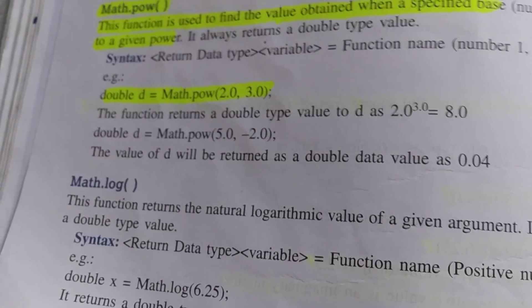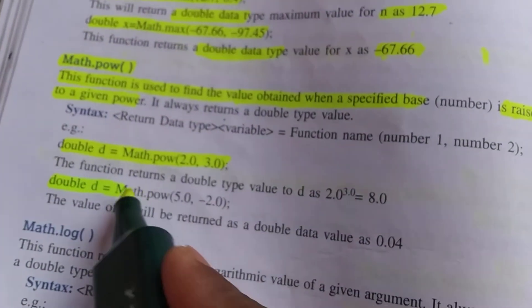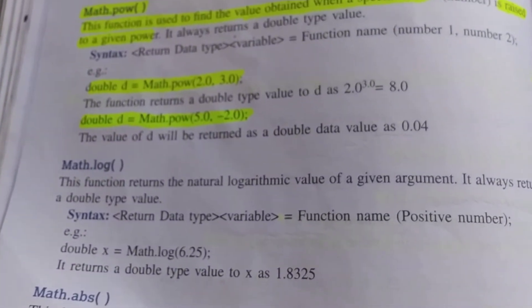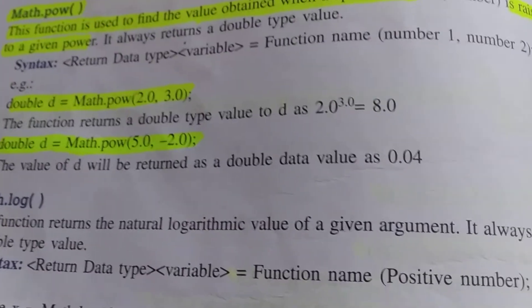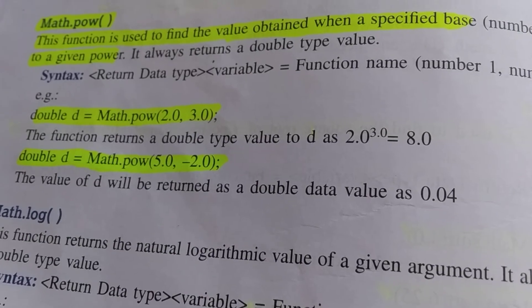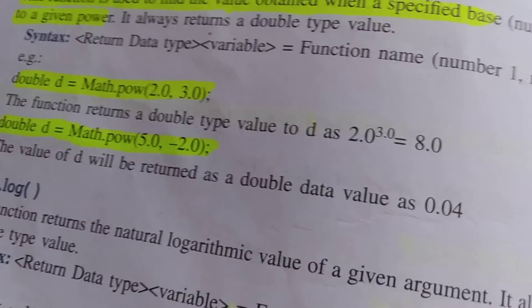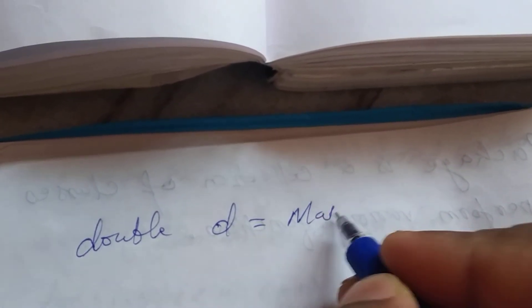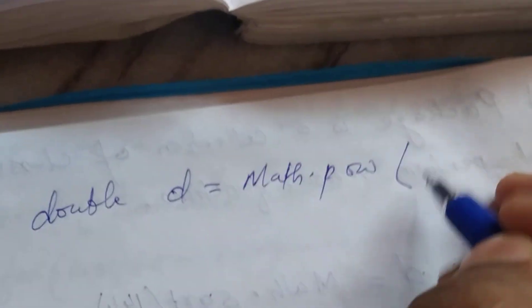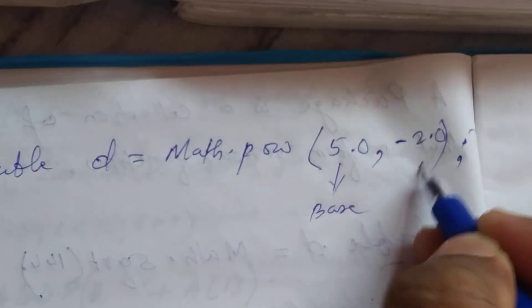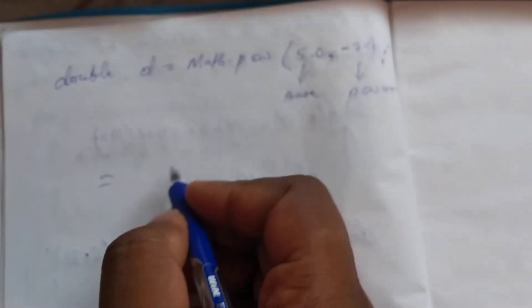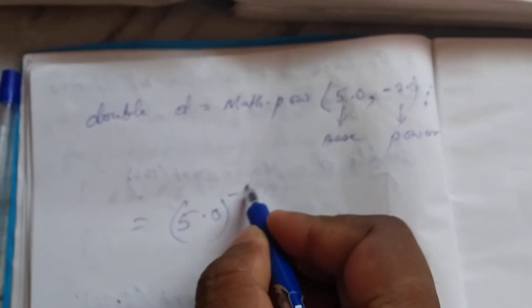Next example: double d = Math.pow(5.0, -2.0). Here the power is negative, so we write 5.0 to the power of -2.0. How do we solve this? The negative sign in the exponent needs to be handled.